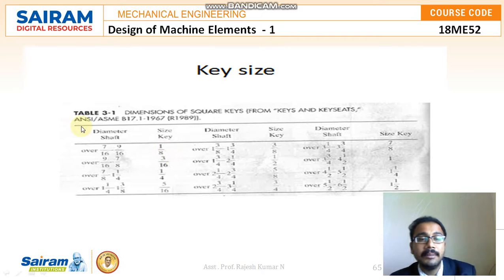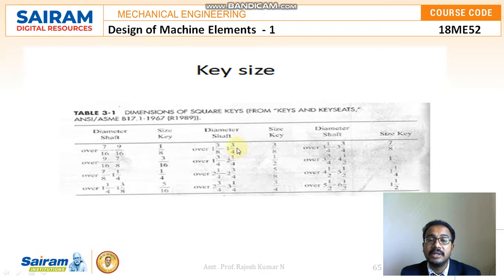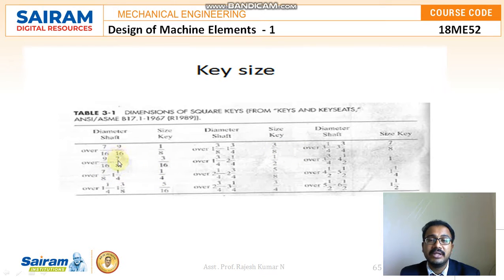From the design data handbook, the dimensions of square keys are given in a table. For a shaft diameter range of 7/16 to 9/16 inches, the key size is 1/8 inch. For a shaft diameter of 1-3/8 to 1-3/4 inches, the key size is 3/8 inch. The value 3/8 refers to both width and thickness, since for a square key width and thickness are equal.